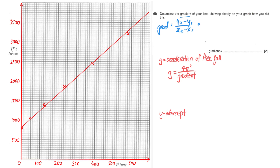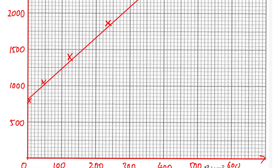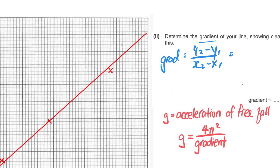Now, the best fit line may not pass through all your existing points, so the best approach is to locate two new points on the line. The two new points should be far apart — at least half the distance between the first and last point on the graph. The points must also be easy to read. For example, if I choose this point because it's a nice intersection, I must put the coordinates here: the horizontal axis reads 20 and the vertical axis reads 900.